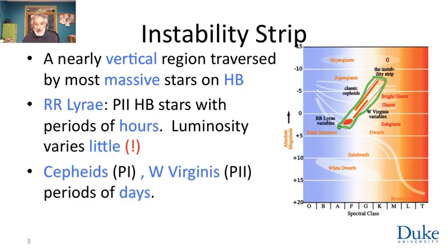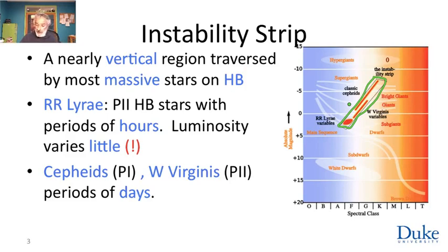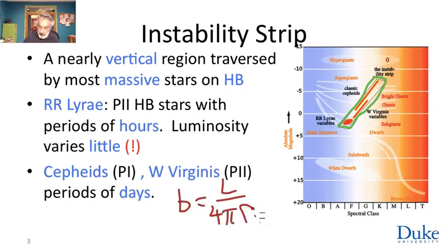If you find an RR Lyrae, that's brilliant, because the luminosities of RR Lyrae variables vary by perhaps a factor of 2 — within a factor of root 2. So you can know the luminosity of a star just by knowing that it's an RR Lyrae variable. By measuring its brightness, you now have two of the three variables that go into our cardinal equation, B equals L over 4 pi D squared. If you measure the brightness and you know the luminosity, you can figure out the distance. Things whose luminosity is known are very useful — they're called standard candles.